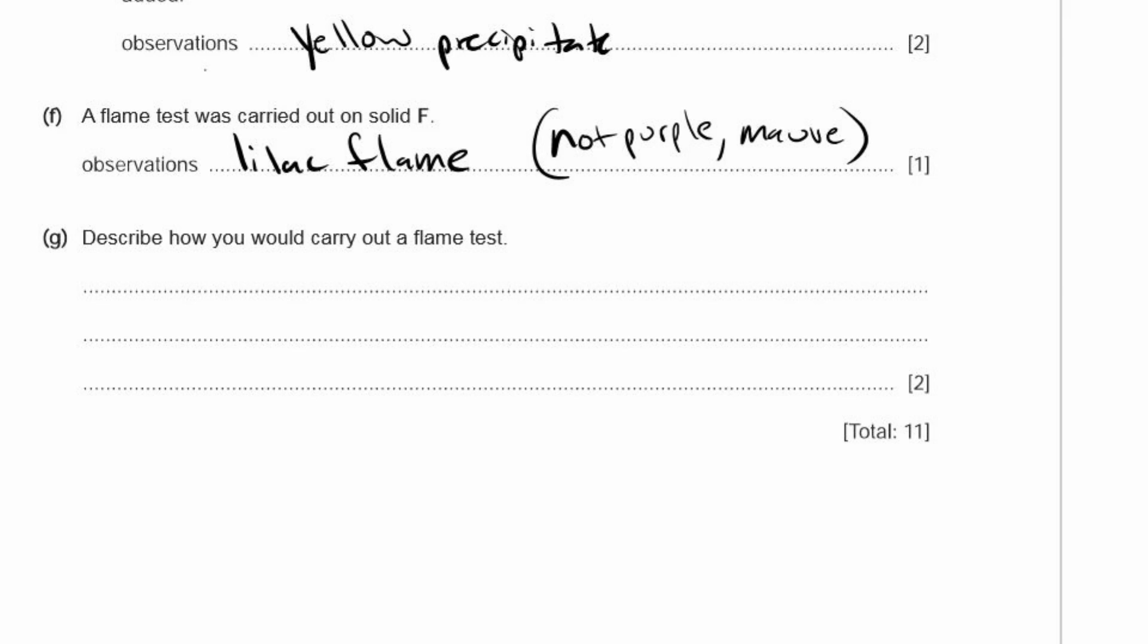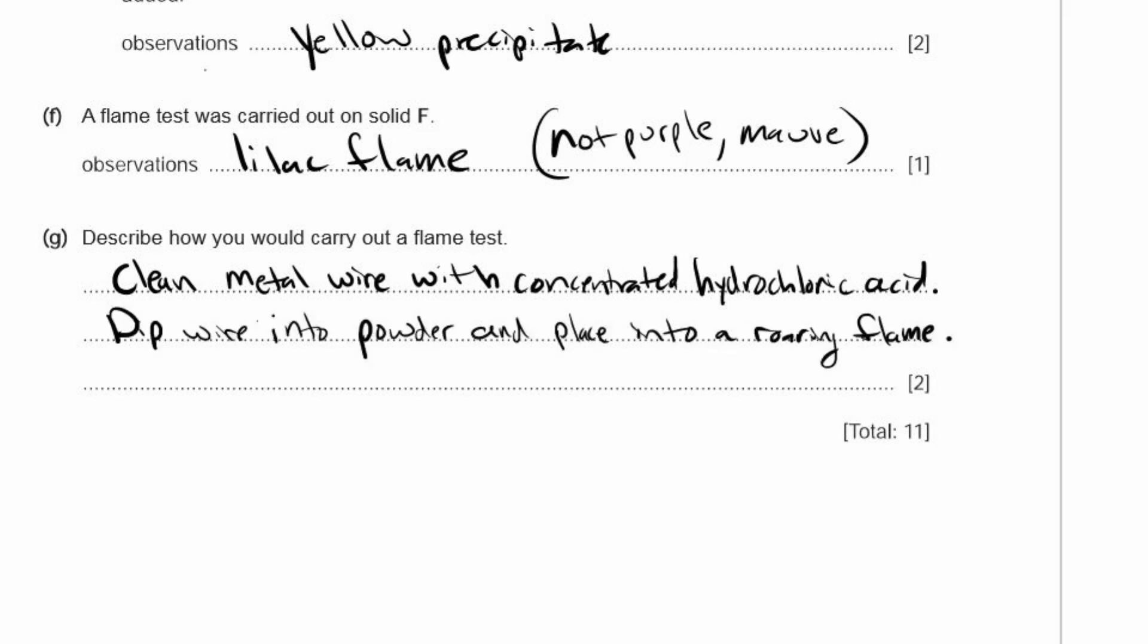G. Describe how you would carry out a flame test. First, get a metal wire, generally a nichrome wire, which is a bit of a loop. You want to make sure it's clean. So you clean a metal wire with concentrated hydrochloric acid. You have to put the word concentrated in there because dilute doesn't work as well. Then you dip the wire into the powder you're testing and place it into a roaring flame. The keyword there is roaring. You want a nice strong flame. You could say it's a blue flame or strong flame, but be specific. Roaring or blue would be better because blue flames are the really hot flames.